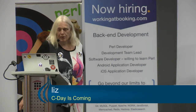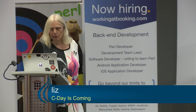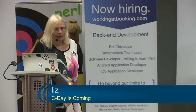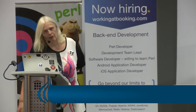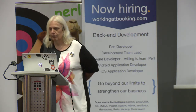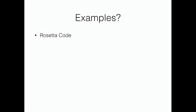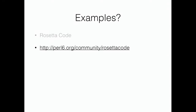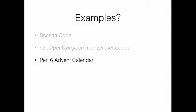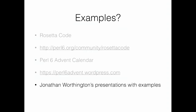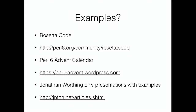How to try Perl 6 as a contributor? It's slightly more involved — you have to do a git clone, etc., and depending on your hardware, between three and five minutes later you have a completely fully operational environment for developing Rakudo Perl 6. If you want to look at examples, there's the Rosetta Code site, we have the Perl 6 advent calendar, and Jonathan Worthington's presentations with lots of examples. He's going to give another talk here this afternoon.